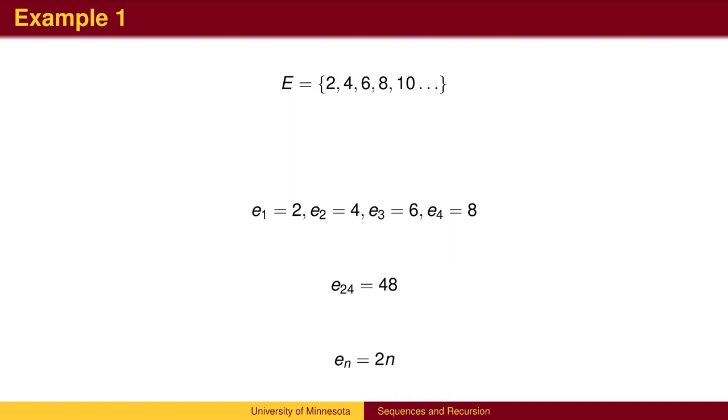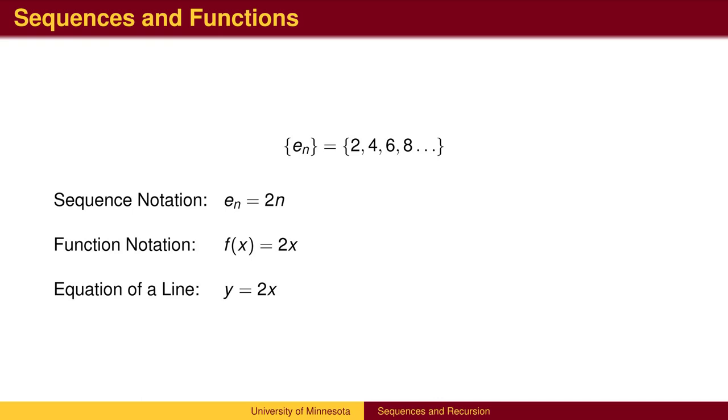In this case, we can write an explicit formula. We get the nth term by multiplying n by 2, so E sub n is 2n. We can also denote the entire sequence by using the lowercase letter and subscript notation.